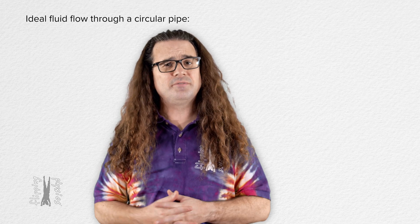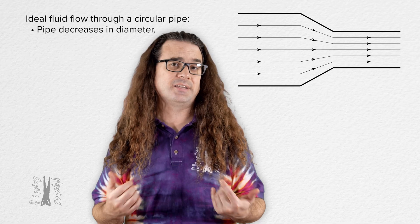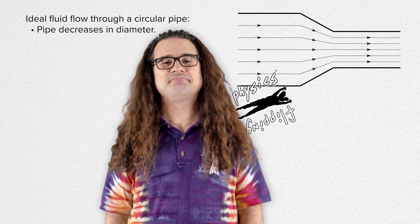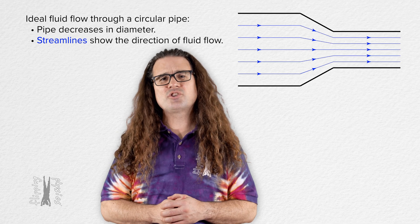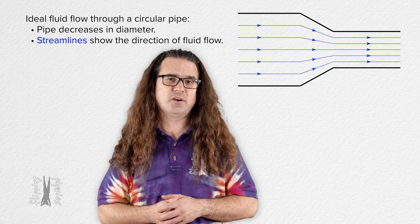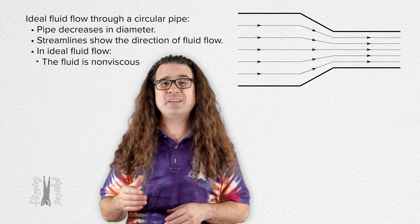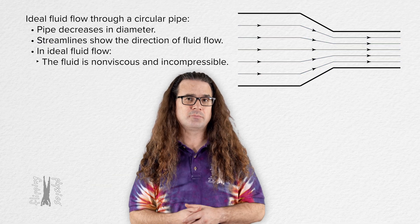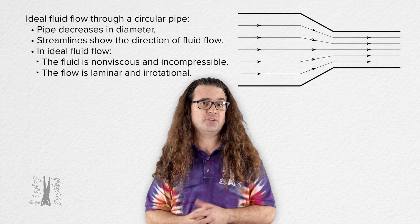Good morning. Let's consider ideal fluid flow through a circular pipe which decreases in diameter. The streamlines showing the direction of the fluid flow are shown in the figure. Remember, in ideal flow, the fluid is non-viscous and incompressible, and the flow is laminar and irrotational.